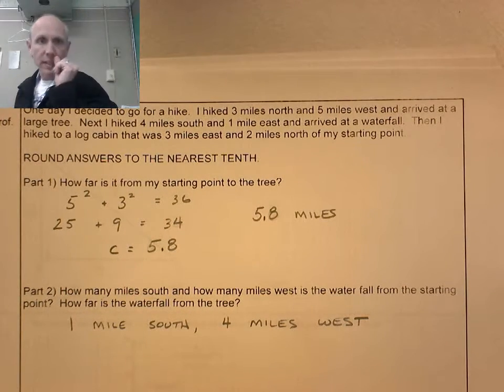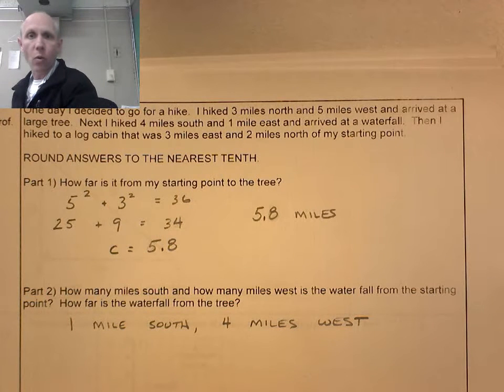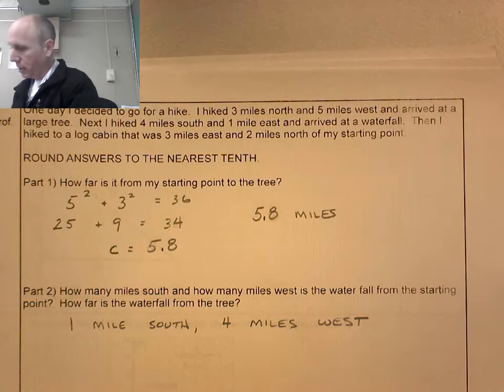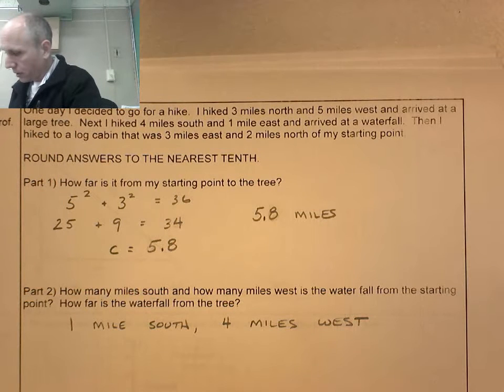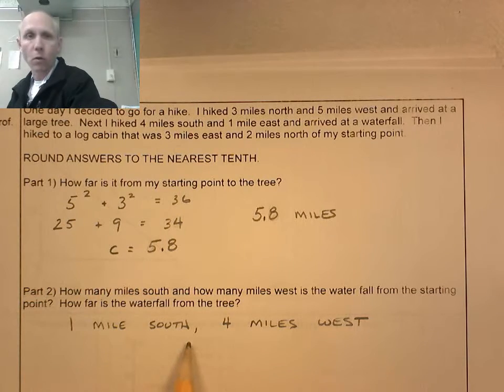Part 2. How many miles south and how many miles west is the waterfall from the starting point? So the waterfall is 1 mile south and 1, 2, 3, 4 miles west. 1 mile south, 4 miles west.